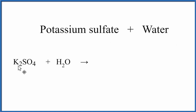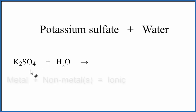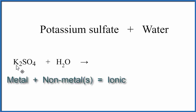We have K, which is a metal, and then this SO4 group — this is a polyatomic ion, it's a group of nonmetals. So when we have a metal and then nonmetals, we have an ionic compound.